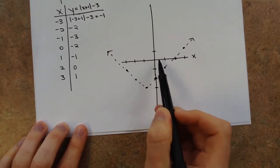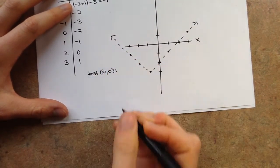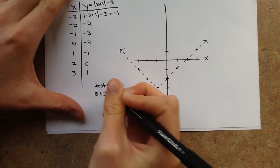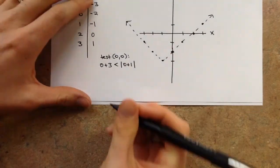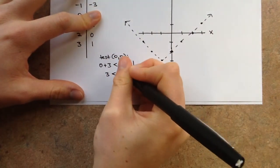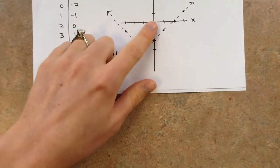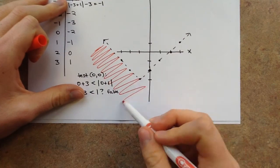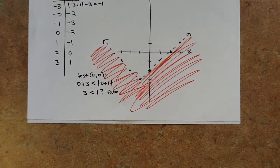Test (0, 0) using the original equation: 0 plus 3 is less than |0 plus 1|? That gives 3 less than 1, which is false. So shade the region not containing the origin — everything underneath the dotted V. Feel free to email me with questions or come in for help in the morning. Thank you.